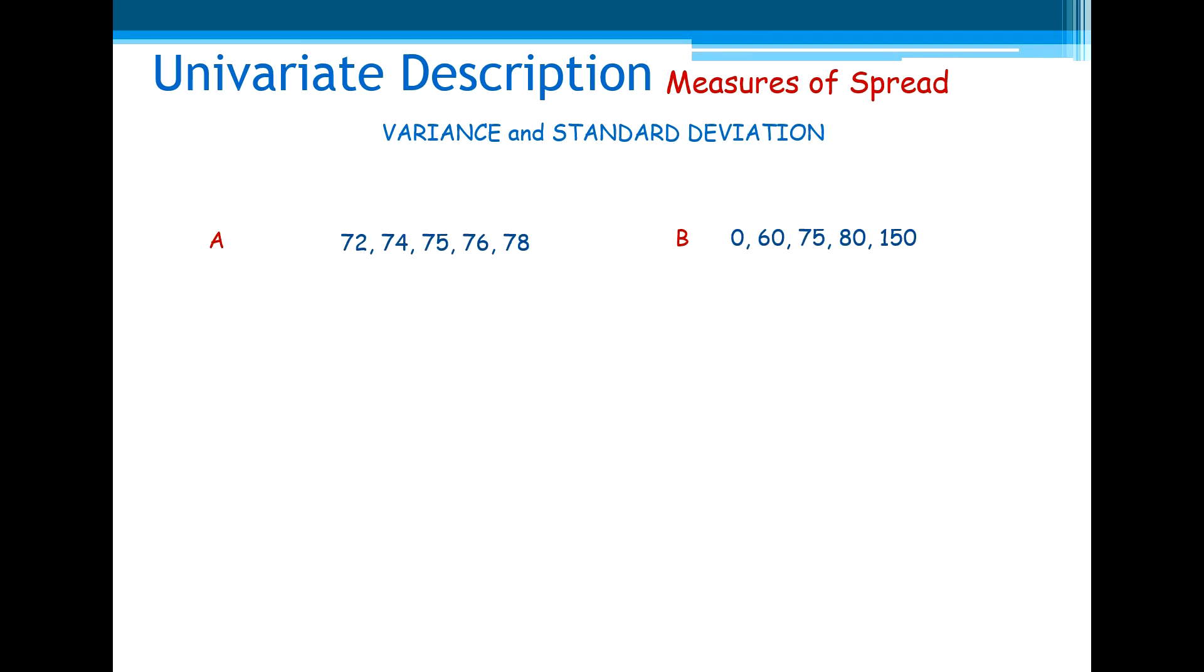Let us consider two sets of data, A and B. They both have the same mean, 75, but we can easily see that one is more dispersed around the mean than the other one.